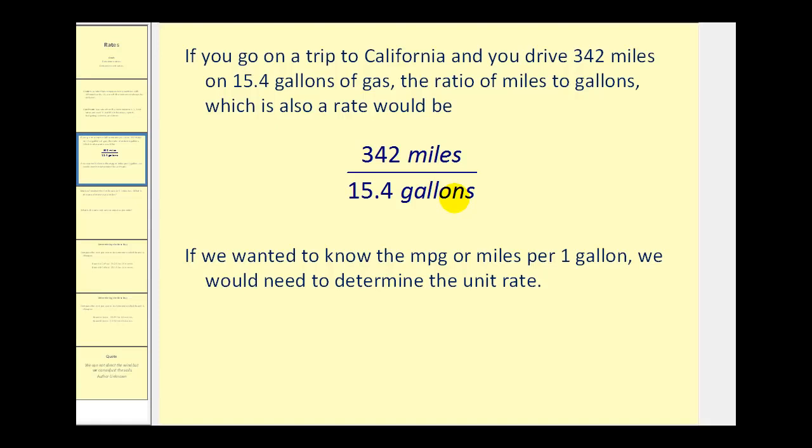If we want to know the miles per gallon or miles per one gallon, we would determine the unit rate. So we would want to rewrite this rate with a denominator of one gallon. If we take 15.4 gallons and divide by 15.4, that would give us one gallon. As you know from your work with fractions, we can do this as long as we do the same to the numerator.